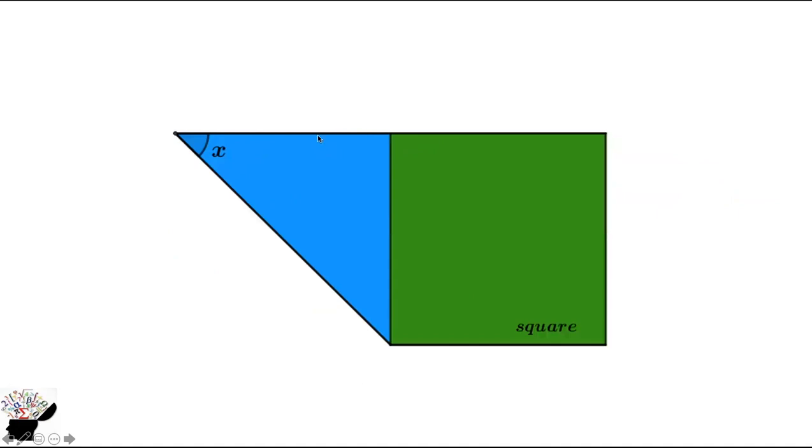So automatically, if this side is the same as this side, this side will be 45. Why? Because it forms a square and when you draw a diagonal, the angle is automatically 45. So the angle is 45.